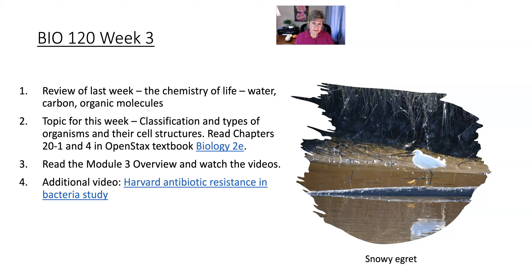The chapters for you to read this week are chapter 21, the first section, which is all about classification, and chapter four, which is all about different types of cells — including bacterial, also called prokaryotic cells, versus eukaryotic cells and their cell structures. Don't forget to use your textbook. It is a handy resource — it is free, searchable, and awesome. Go to your textbook as your main resource in this course. Also read the module three overview and watch the several videos provided.